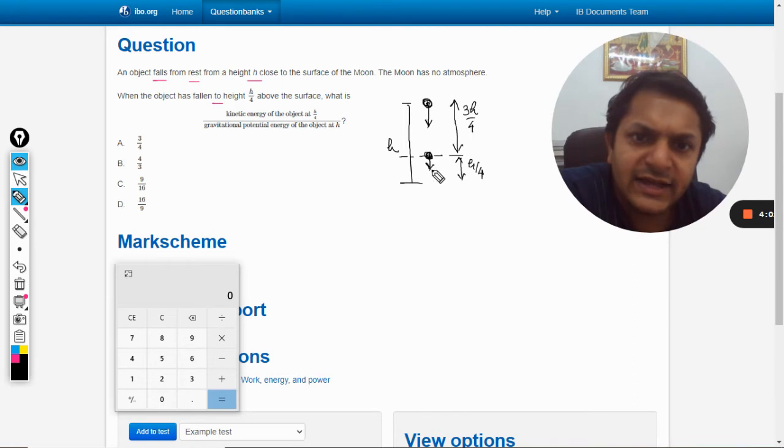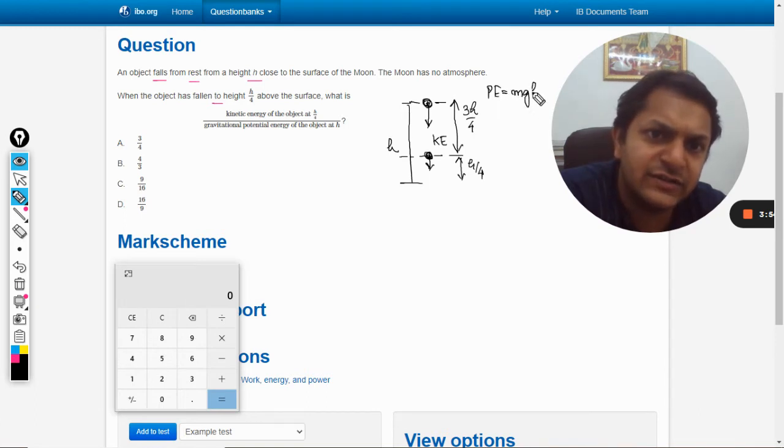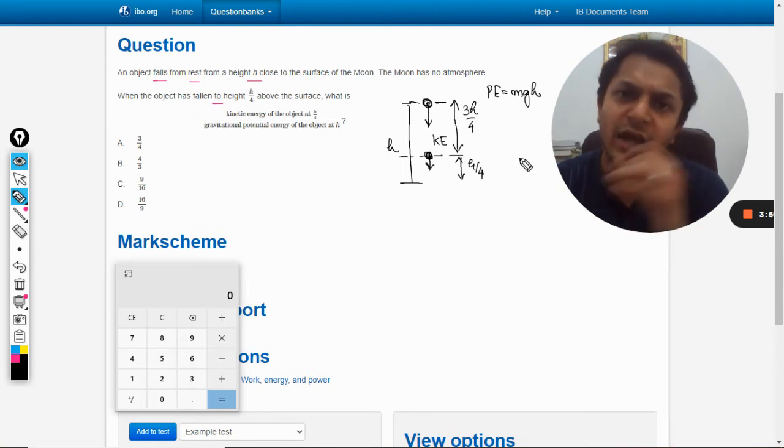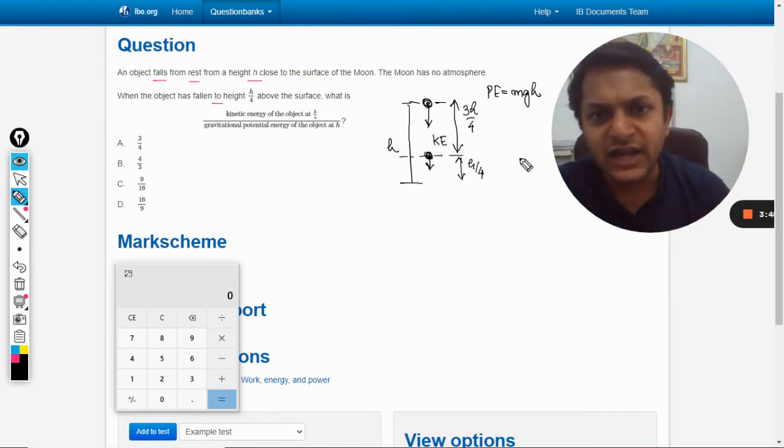When the body reaches, it has certain kinetic energy, and there is a total potential energy that it has, and this potential energy is mgh. So we need to find what is the kinetic energy of the body when it has reached that point, the final position, and what is the potential energy initially, and we will find the ratio.